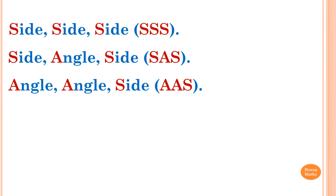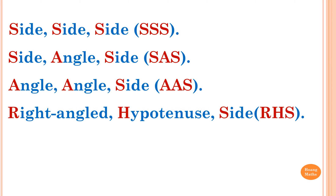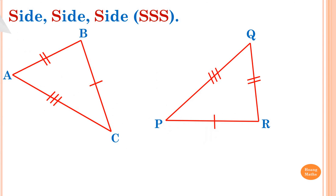The third rule is Angle Angle Side (AAS): two corresponding angles and a corresponding side are equal. The last rule is Right angle Hypotenuse Side (RHS): the corresponding angle is 90 degrees, the hypotenuses are the same, and the corresponding sides are equal.